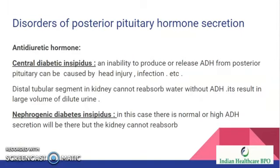Disorders of posterior pituitary hormone secretion include two types of diabetes insipidus: central diabetic insipidus and nephrogenic diabetic insipidus. In central diabetic insipidus, there is an inability to produce or release ADH from the posterior pituitary, which can be caused by head injury or infection. Without ADH, the distal tubular segment in the kidney cannot reabsorb water, resulting in a large volume of dilute urine. In nephrogenic diabetes insipidus, there is normal or high ADH secretion but the kidney cannot reabsorb water.